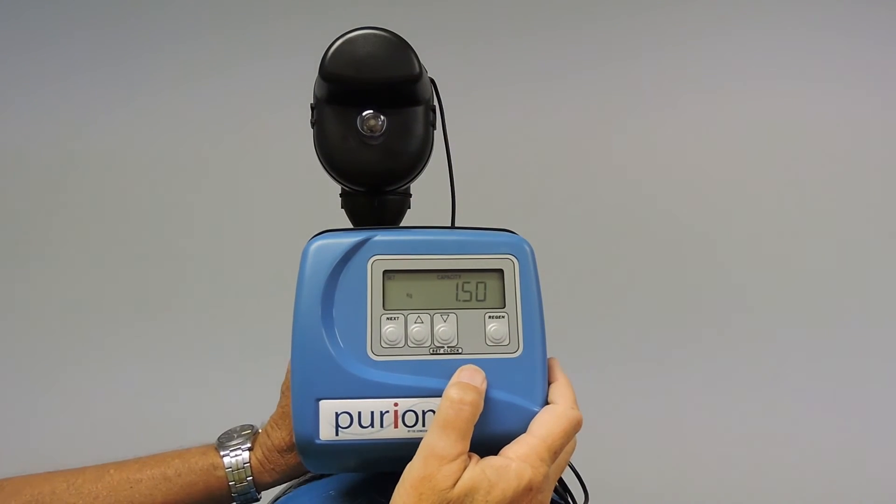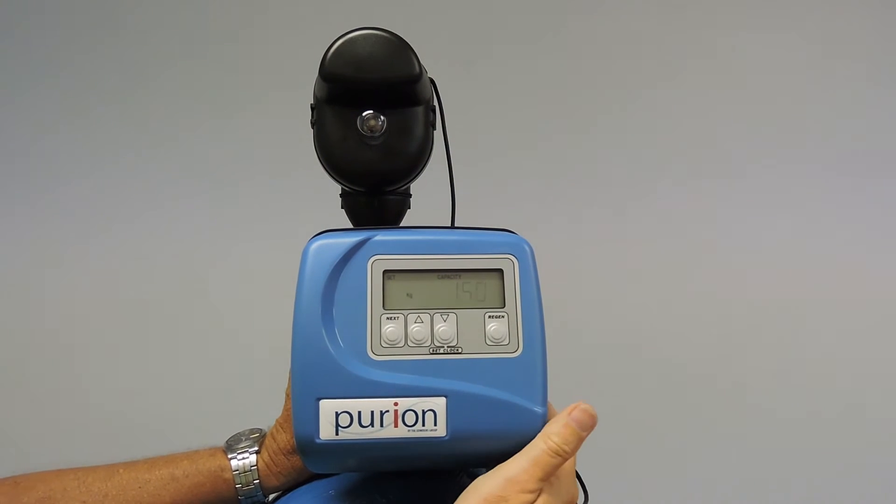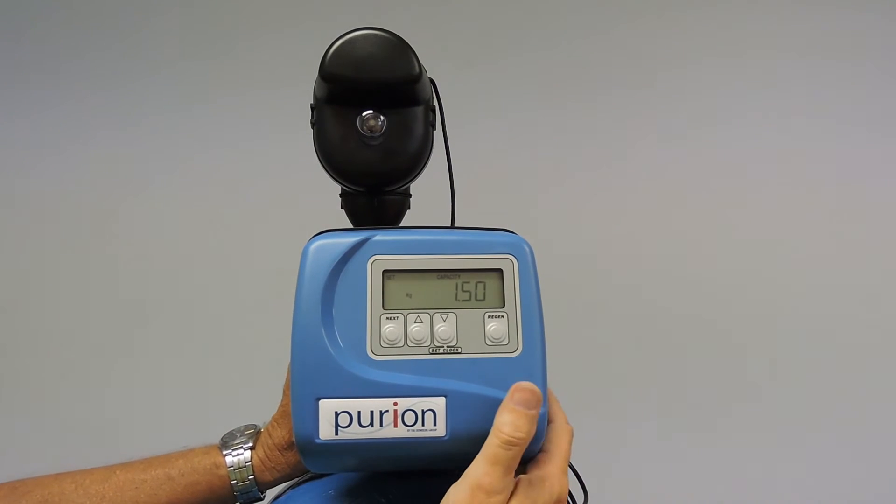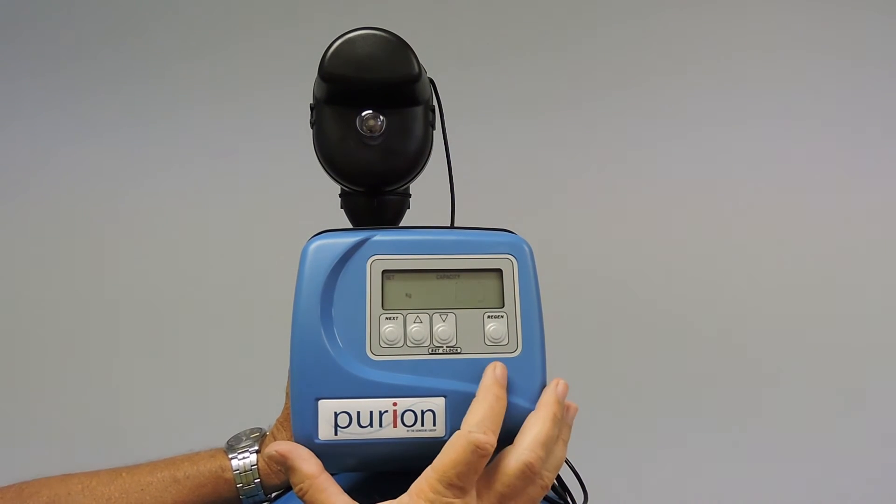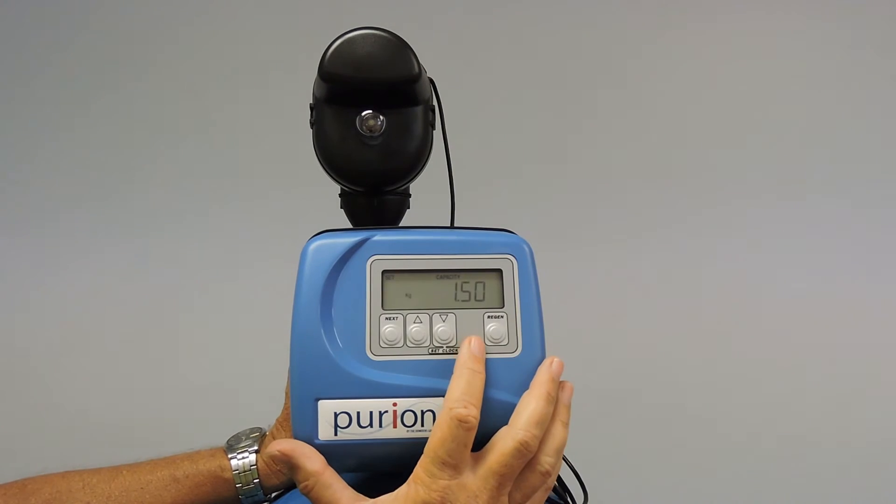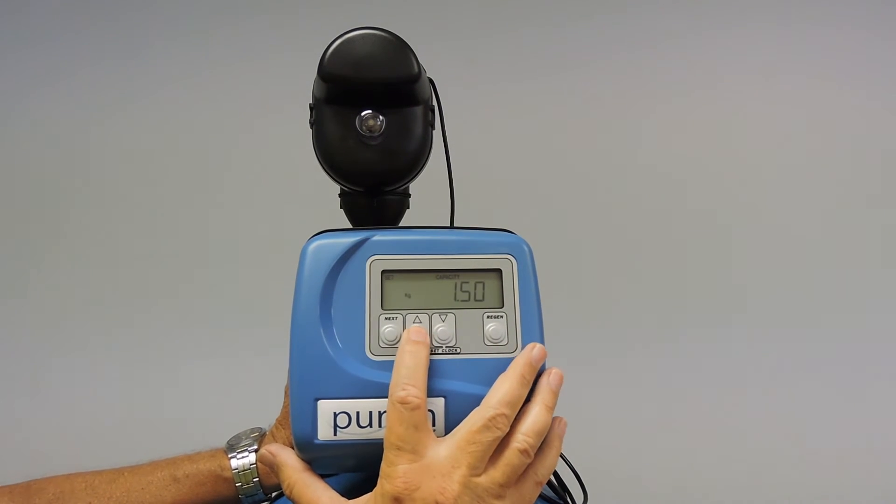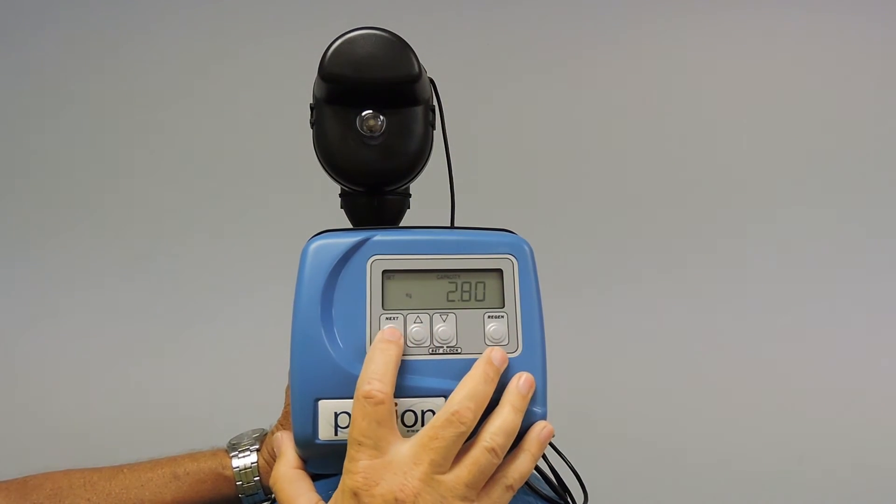And now we're into capacity. This is capacity of exchange hardness. We've calculated 12 inch softener to be able to remove 2.8 kilograms of calcium magnesium hardness. So we will arrow up. And accept.